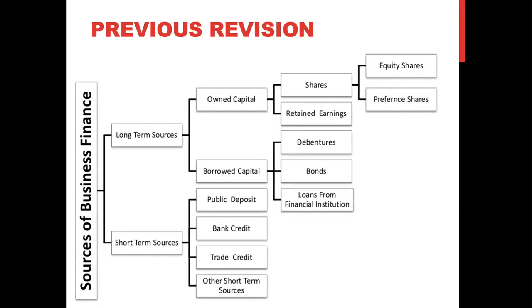The first chapter was Corporate Finance Introduction. In the second chapter we saw the sources of corporate finance. We studied about two sources: long term sources and short term sources. In long term sources we studied owned capital and borrowed capital. Owned capital consists of shares and retained earnings. Shares are divided into equity shares and preference shares. In borrowed capital we covered debentures, bonds, loans from banks and financial institutions, public deposits, trade credit, and other short term sources like ADR and GDR.